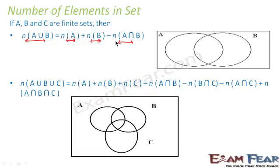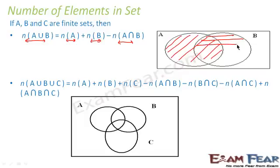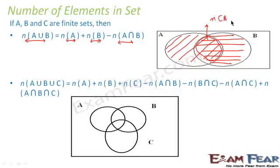Now let's visualize how this formula came about. The number of elements in A is represented by the tilted lines, and the number of elements in B is represented by horizontal lines. So when I say number of elements in A plus number of elements in B, I'm including this area plus this area. As you can see, this overlapping area is calculated twice — once when adding elements in A and a second time when adding elements in B. That's why we have to subtract this area, which is A intersection B.